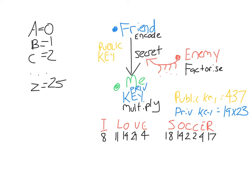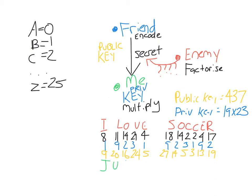To encode the message, I take the two numbers in the private key — 19 and 23 — and write them out as 19231923. I then shift each letter by the corresponding number in blue by adding the two numbers together. So 8 plus 1 is 9, 11 plus 9 is 20, 14 plus 2 is 16, and so on for the rest. I now have a whole new set of numbers, which I turn back to letters using the same correspondence: 9 corresponds to J, 20 to U, 16 to Q, and so on.